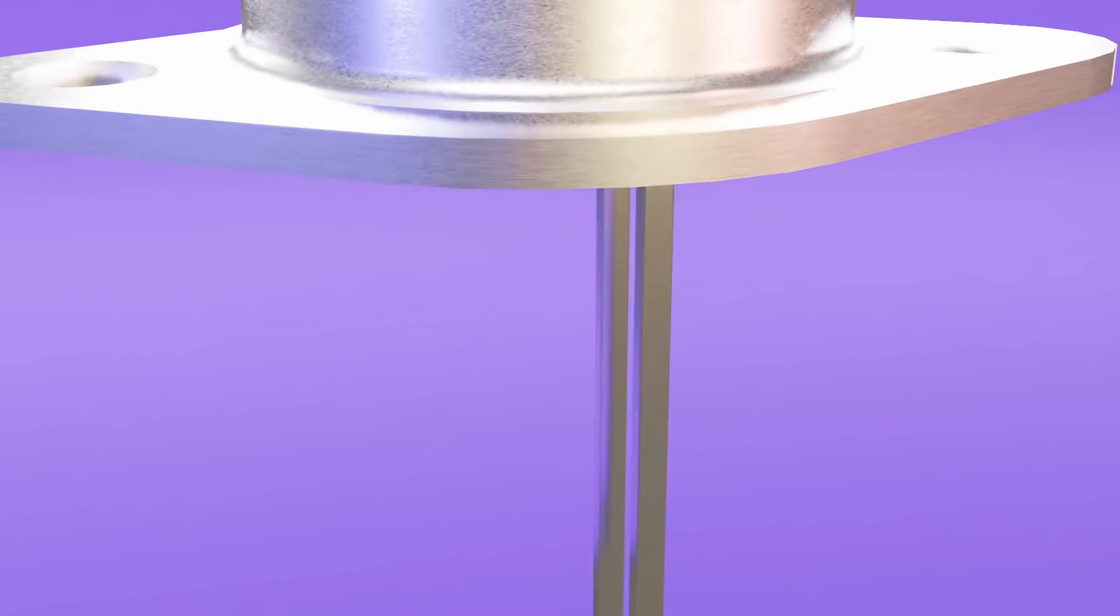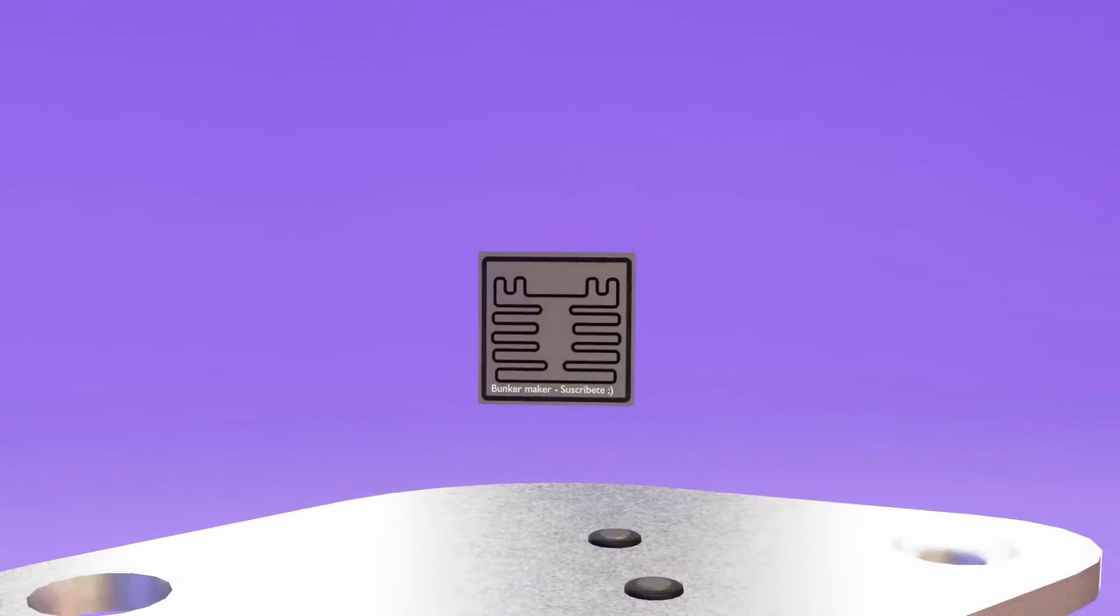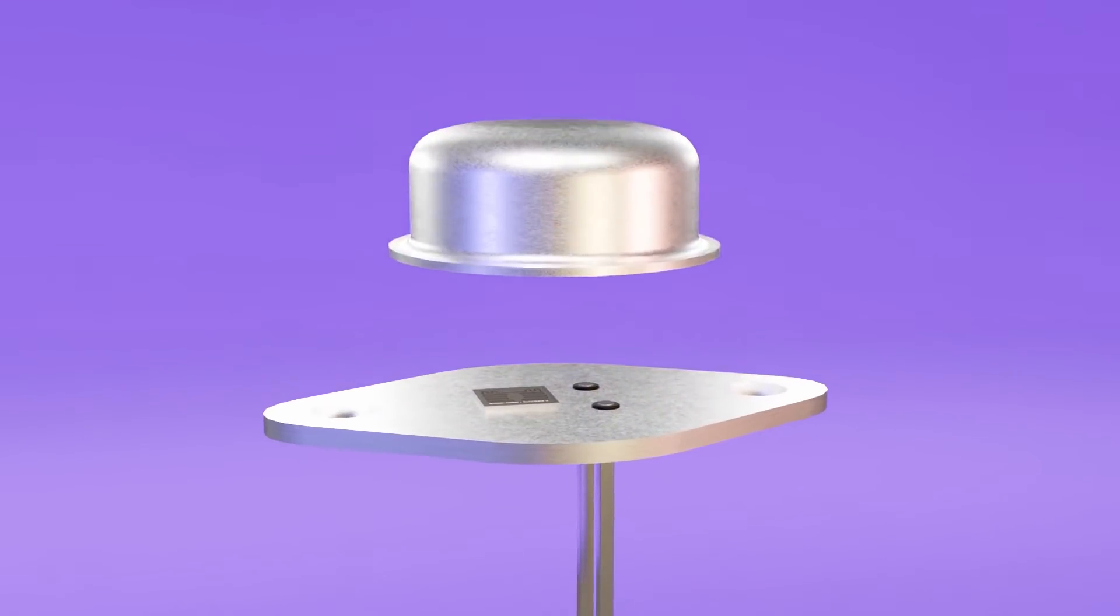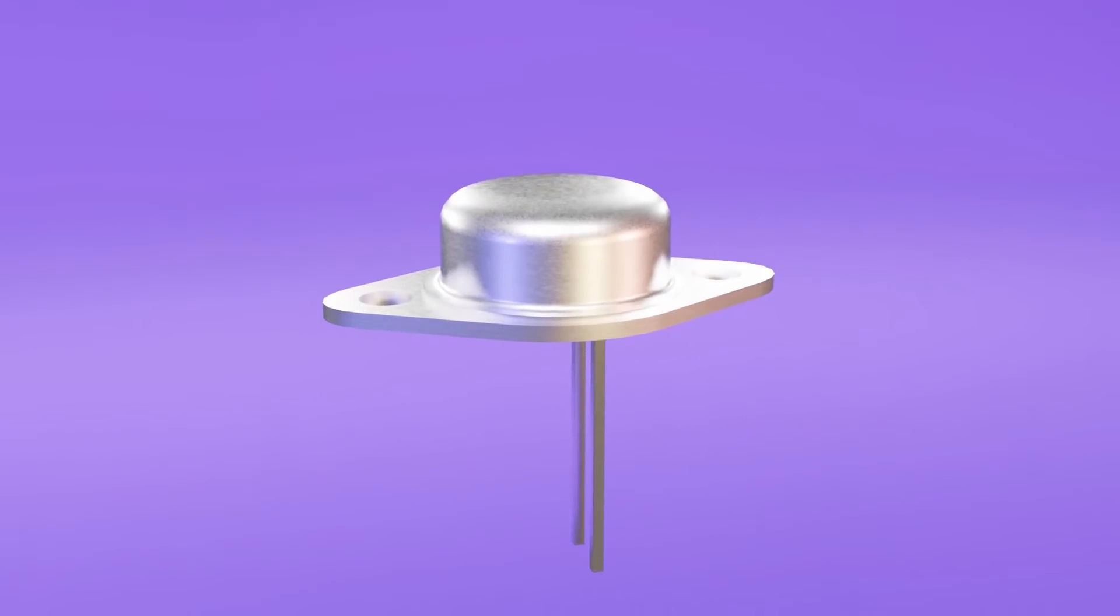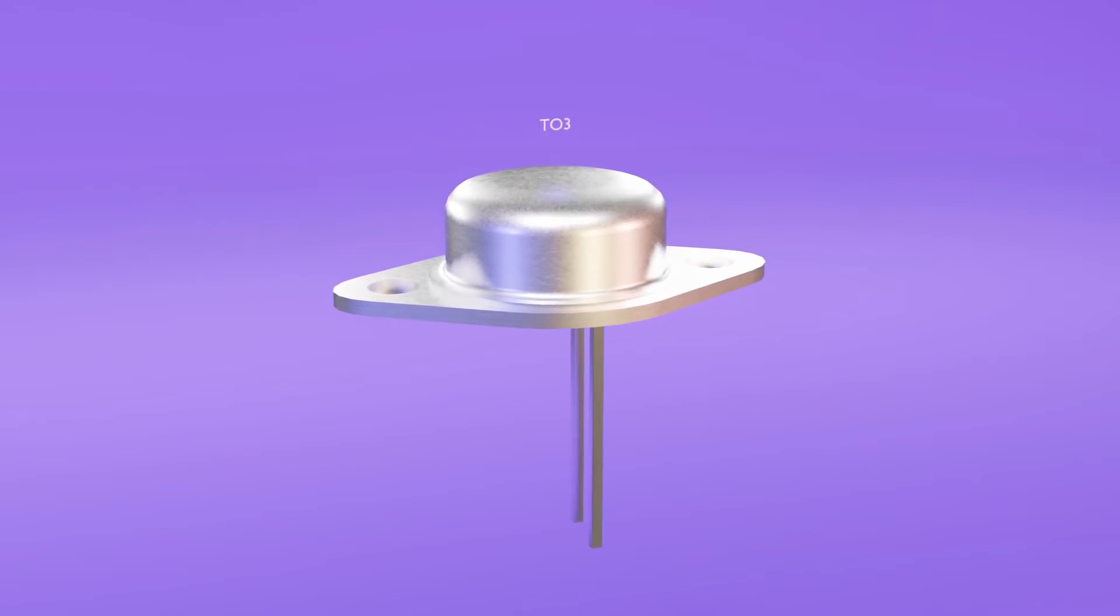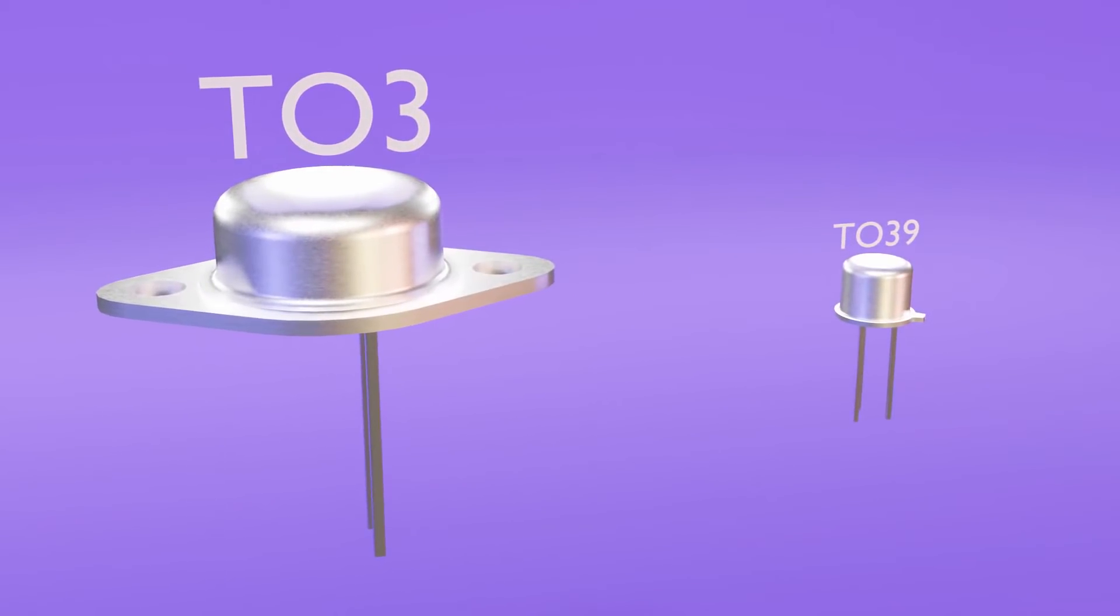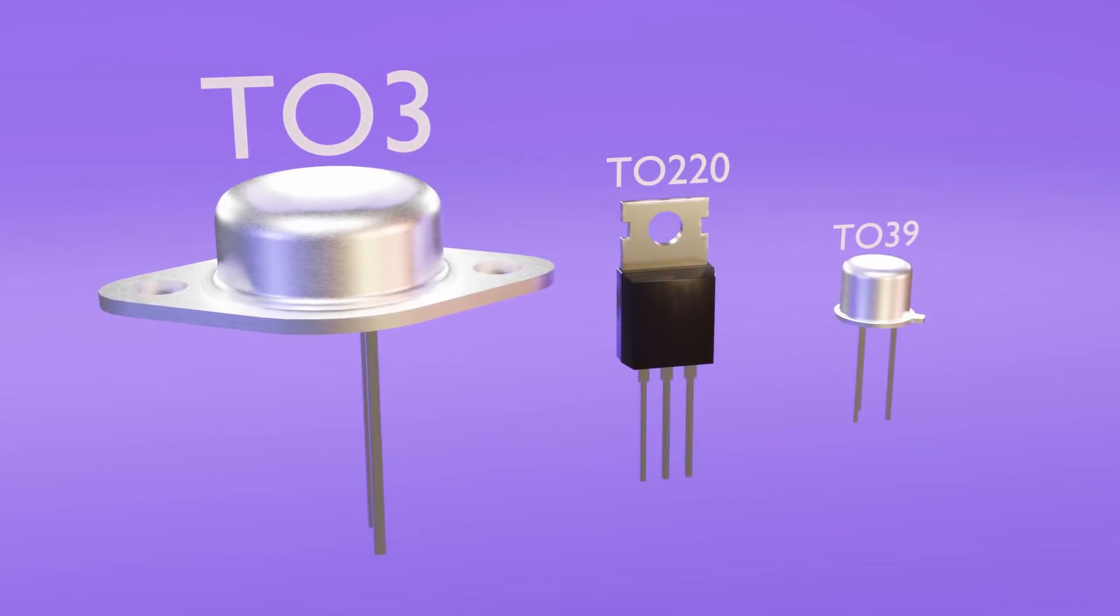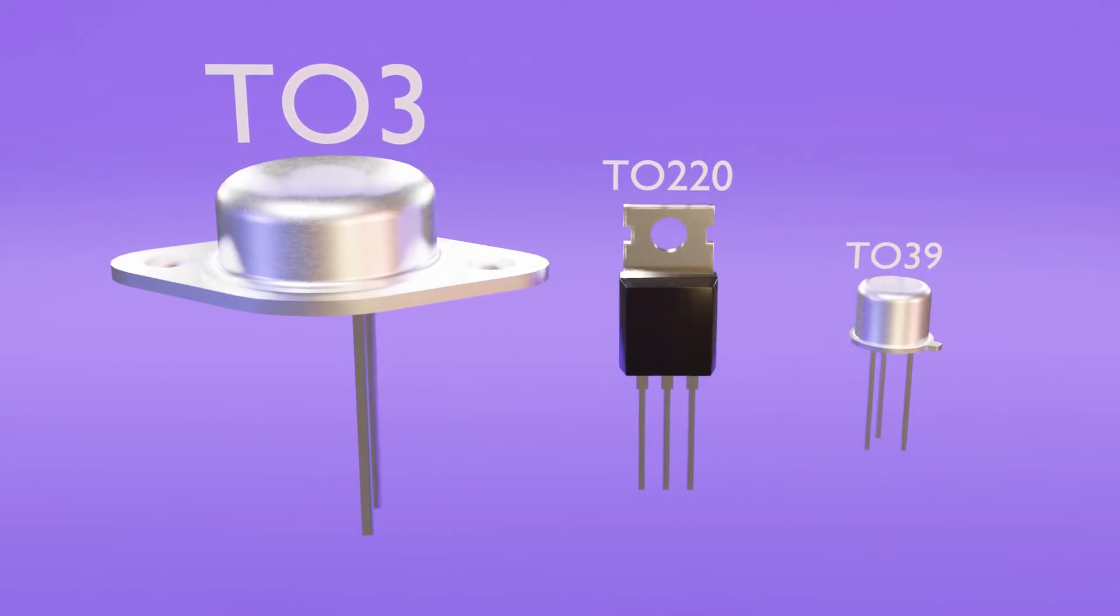Secondly, I want to make a difference between the type of transistor, that is the relationship between its internal components, and the encapsulation or housing that protects it. Since the same package can serve for several different types of transistors, for example at a glance we might know this is a TO3 package, a TO39, and a TO220, but we could not know if they are an NPN, PNP, MOSFET or whatever.